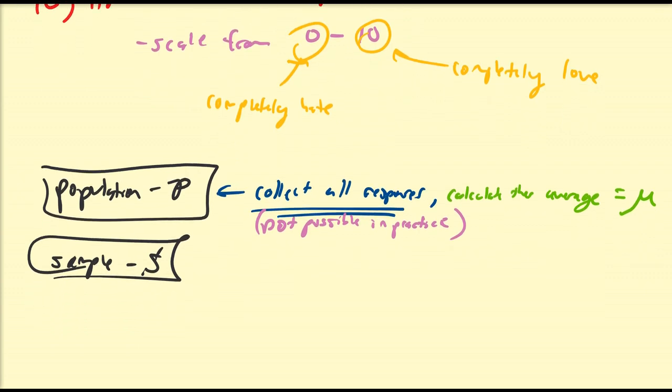What we do is we collect the sample. Collect the sample responses. Which is typically possible, actually always possible, under extreme circumstances. From here, what we're going to do is we're going to calculate its average. And we're going to call this average x-bar.